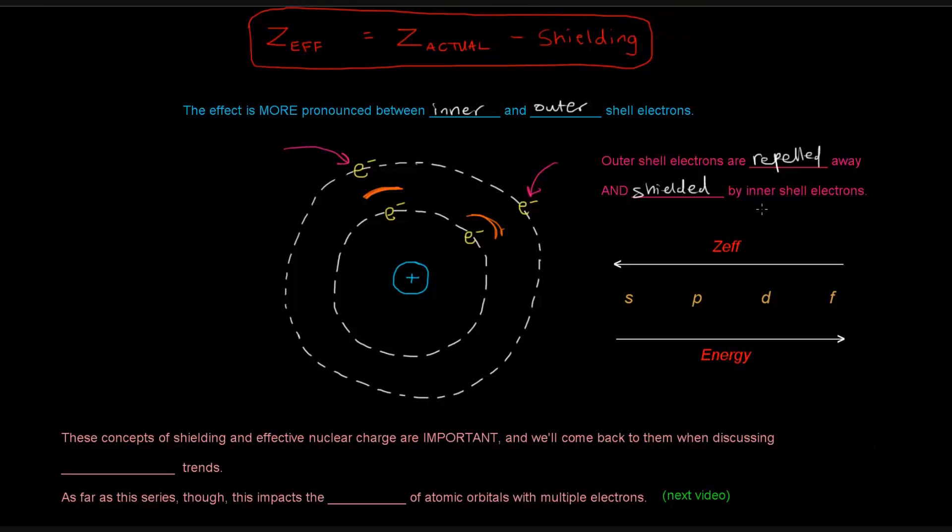So you could sort of be able to draw from this that when we're talking about the shapes or the different types of orbitals, the S orbital, P orbital, D orbital, and F orbital,